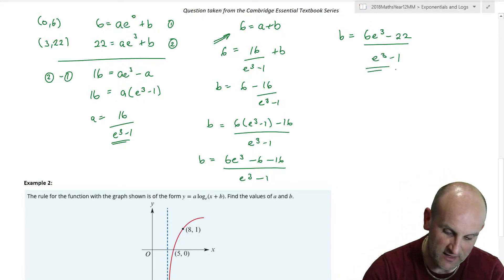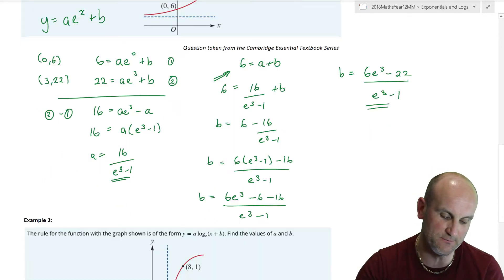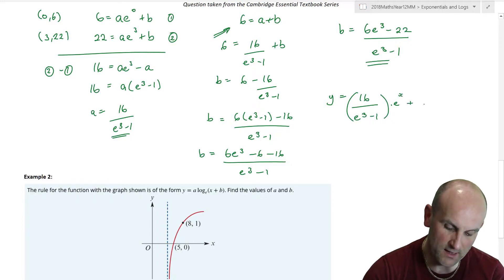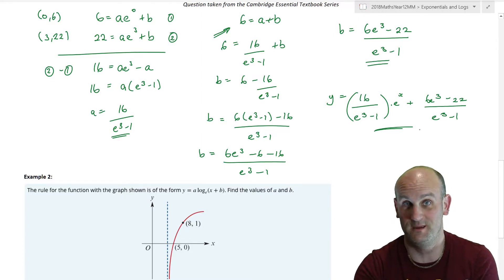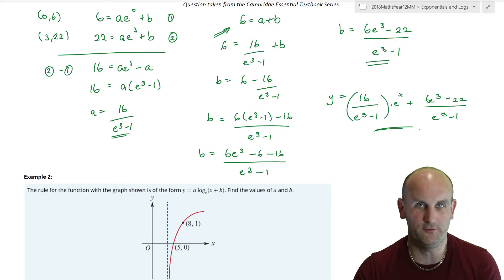So I know that 6 equals 16 on e to the 3 minus 1 plus b, or b is now 6 minus 16 on e to the 3 minus 1. Now that's simplifiable, so I'm going to simplify it. So I'm going to get 6 lots of e to the 3 minus 1 minus 16 all on e to the 3 minus 1. So b becomes 6e to the 3 minus 6 minus 16 all on e to the 3 minus 1. I've just put them over a common denominator. And now I'm going to simplify my value of b to give me 6e to the 3 minus 22 on e to the 3 minus 1. And I finish my question. Yes, because I've got my value of a and b. But what I'm actually going to do is substitute them back in. So we now know my final equation is y equals 16 on e to the 3 minus 1 times e to the power of x plus 6e to the 3 minus 22 over e to the 3 minus 1. That's what methods is.